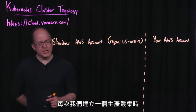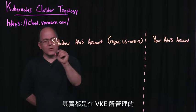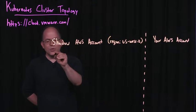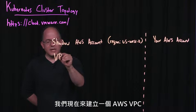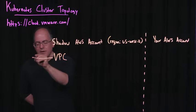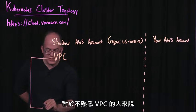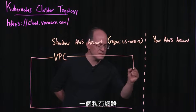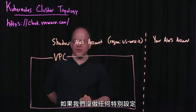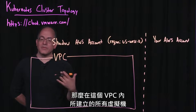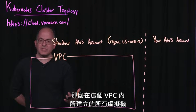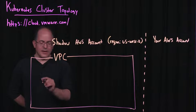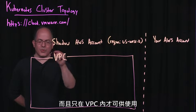Every time we create a production cluster, we are within this shadow AWS account that is managed by VKE. We are going to create an AWS VPC. For those of you who are not familiar with the VPC, this is a single private network within AWS. If we don't go to any special effort, all of the virtual machines that we create within this VPC are going to be on private networks and only available within the VPC.